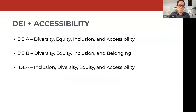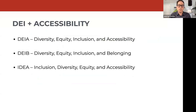Diversity, equity, and inclusion overlaps with accessibility — I consider it part of the same objective. There are a number of abbreviations that include accessibility in DEI: DEIA appends accessibility as one of four things; DEIB considers accessibility part of equity with belonging added as well. I've also seen the letters rearranged to IDEA. But the spirit remains the same — we're trying to make sure that everyone, regardless of their background, preferences, or abilities, is included in what we create.